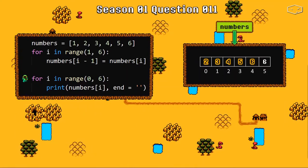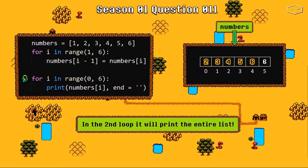After all of these, Python goes to the second loop and in the second loop it will print the entire list. So what we have in the list is 2 3 4 5 6 6, and this is why option C is the right answer.